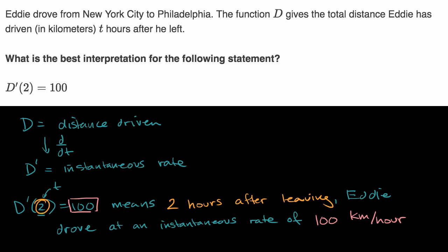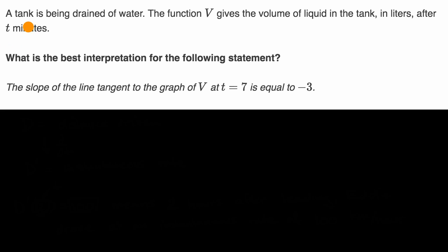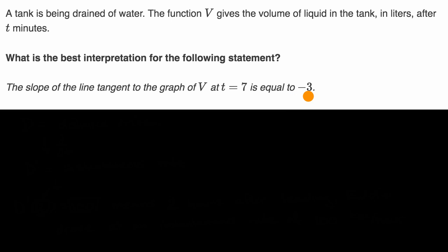Let's do another example. Here we are told a tank is being drained of water. The function v gives the volume of liquid in the tank in liters after t minutes. What is the best interpretation for the following statement? The slope of the line tangent to the graph of v at t equals seven is equal to negative three. Pause this video and try to write out that interpretation — make sure to get the units right.